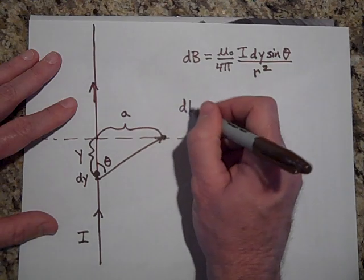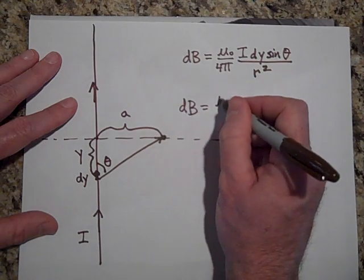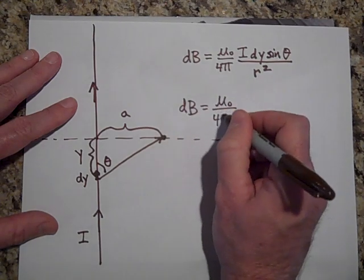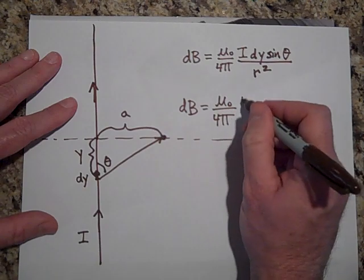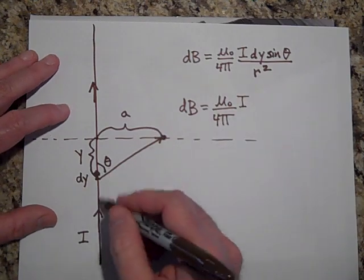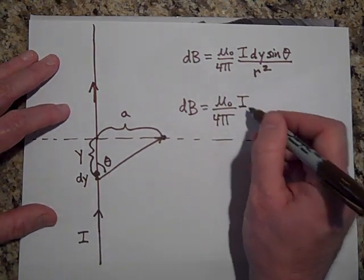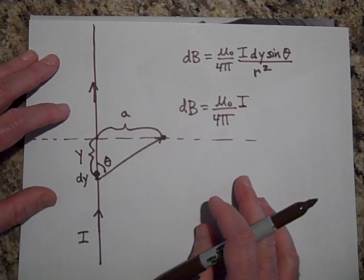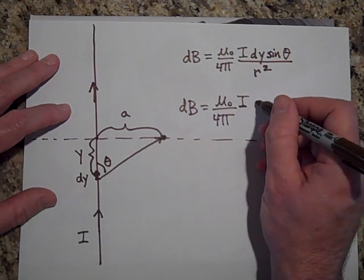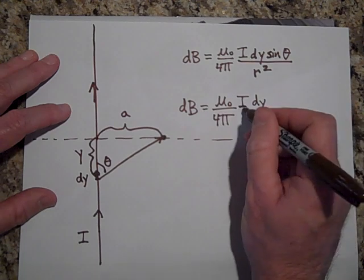Okay, well, what we do is we're just going to put everything in terms of Y. So I can put theta in terms of Y, and I can put R squared in terms of Y. It turns out that before I integrate, I'm going to do this. So bring this over. Use I. I is just a constant. It's a number that would be four amps or one amp or what have you. I'll have a DY there.